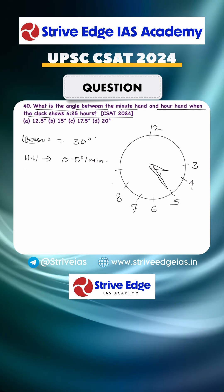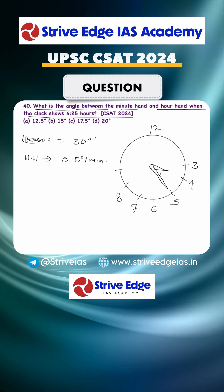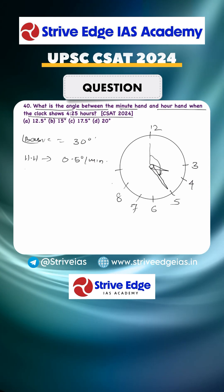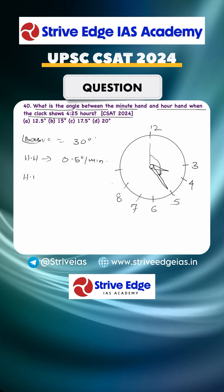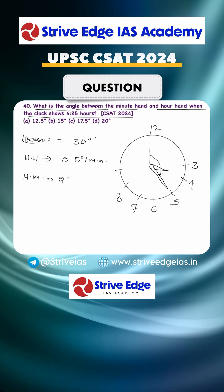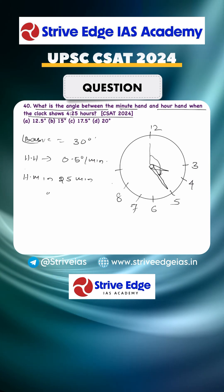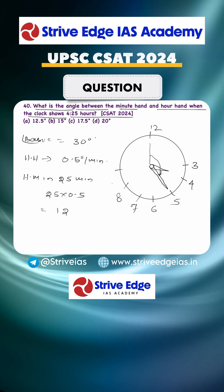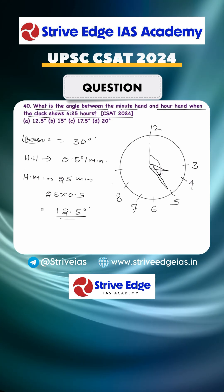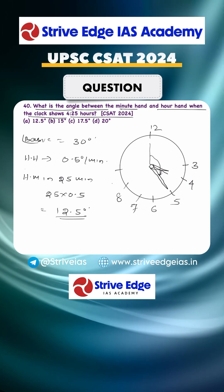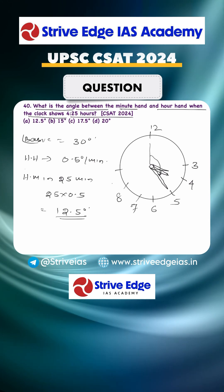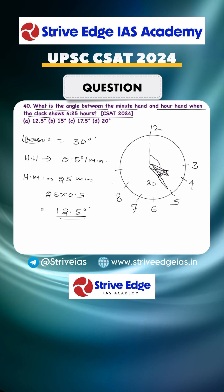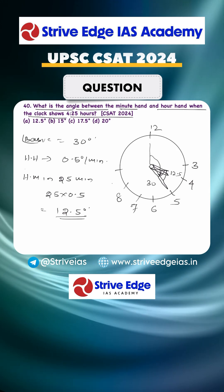Now, because of these 25 minutes, how much extra angle will the hour hand travel? The hour hand will travel 25 into 0.5, that is 12.5 degrees. So this hour hand will travel 12.5 degrees extra, and we know the total basic angle is 30 degrees, so this remaining angle is 12.5 degrees.